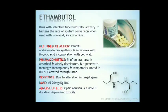Ethambutol. It is a drug with selective tuberculostatic activity, active against Mycobacterium avium complex and some other mycobacteria. It hastens the rate of sputum conversion and shows low resistance when used with isoniazid or pyrazinamide. Its mechanism of action is not fully understood, but ethambutol is found to inhibit arabinogalactan synthesis and interfere with mycolic acid incorporation in the mycobacterial cell wall. About three-fourths of an oral dose is absorbed, distributed widely, penetrates meninges incompletely, and is stored in RBCs temporarily. It is excreted through urine with a plasma half-life of about 4 hours. Resistance is due to alteration in the drug-target gene and develops slowly. Dose: 15-20 mg/kg. Adverse effects include loss of visual acuity or color vision due to optic neuritis.